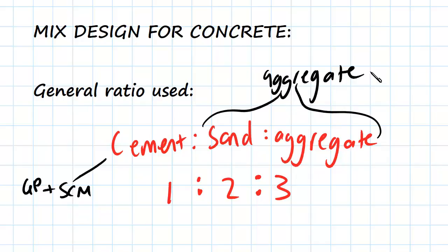Essentially, we can think of the ratio of cement to aggregate as 1:5. But if we divide that further between fine and coarse aggregate, we're looking at 2:3.